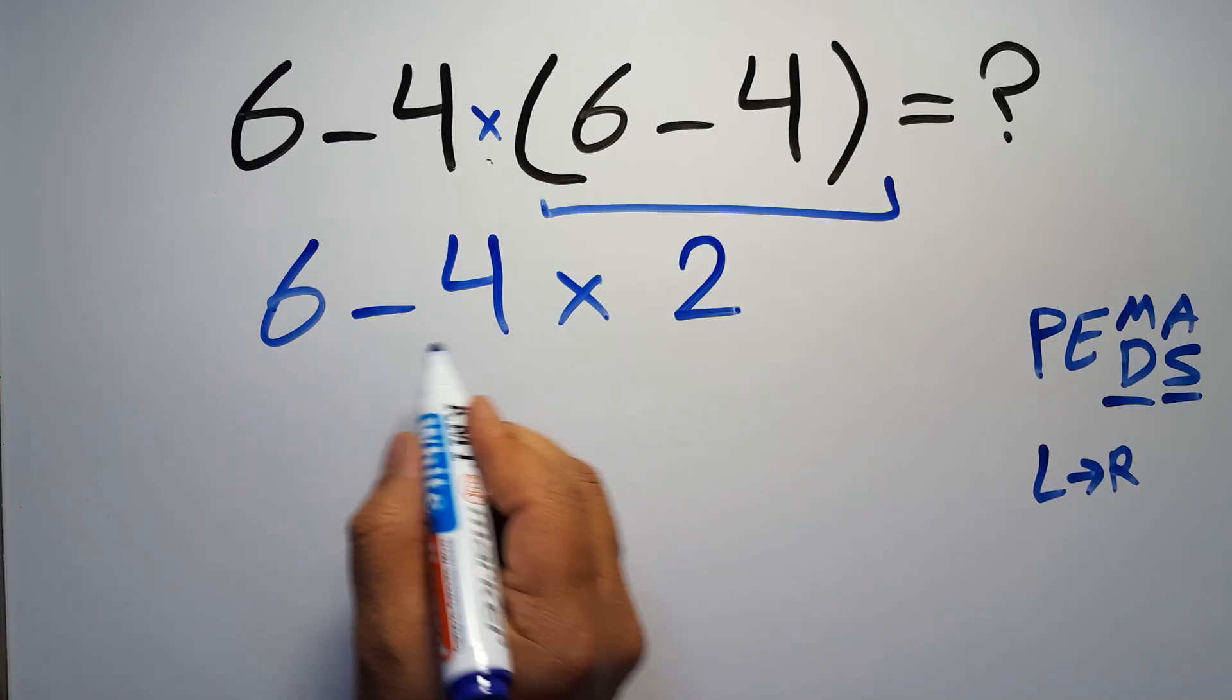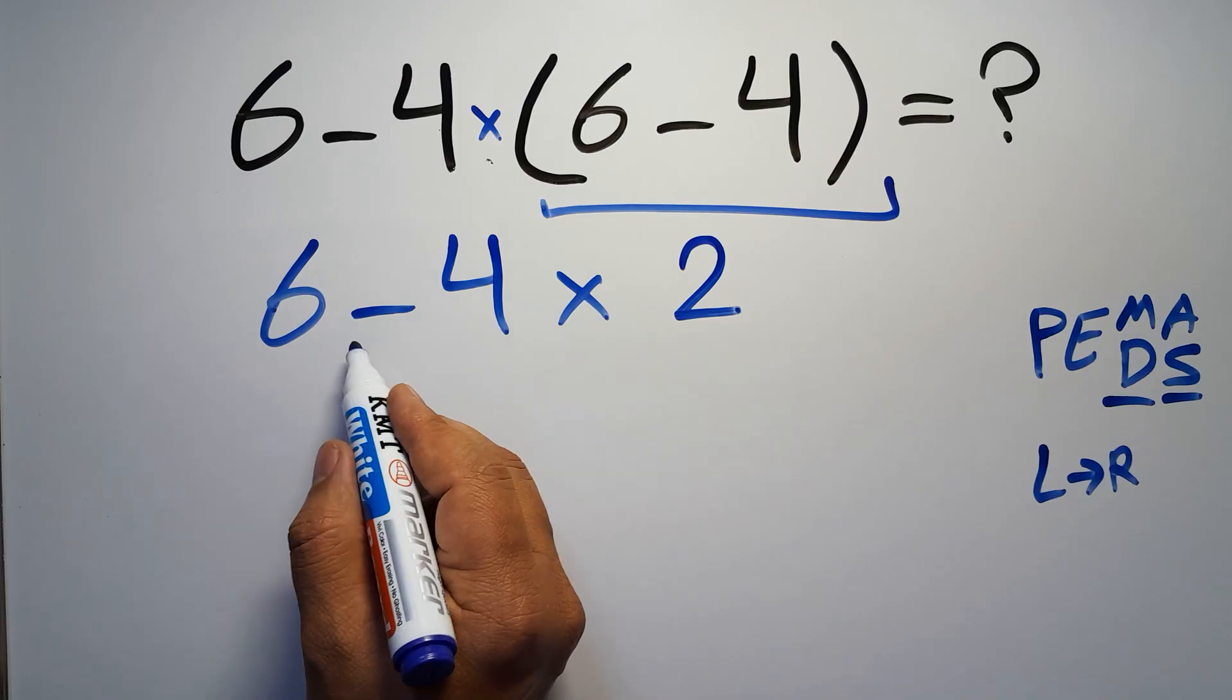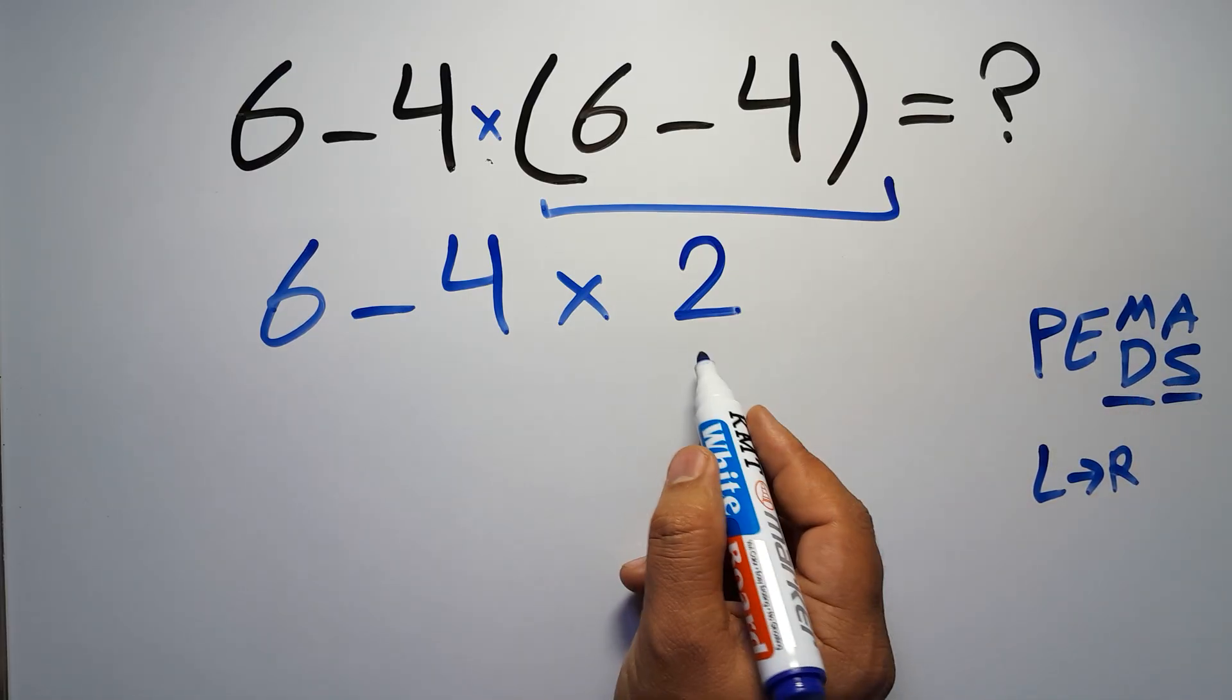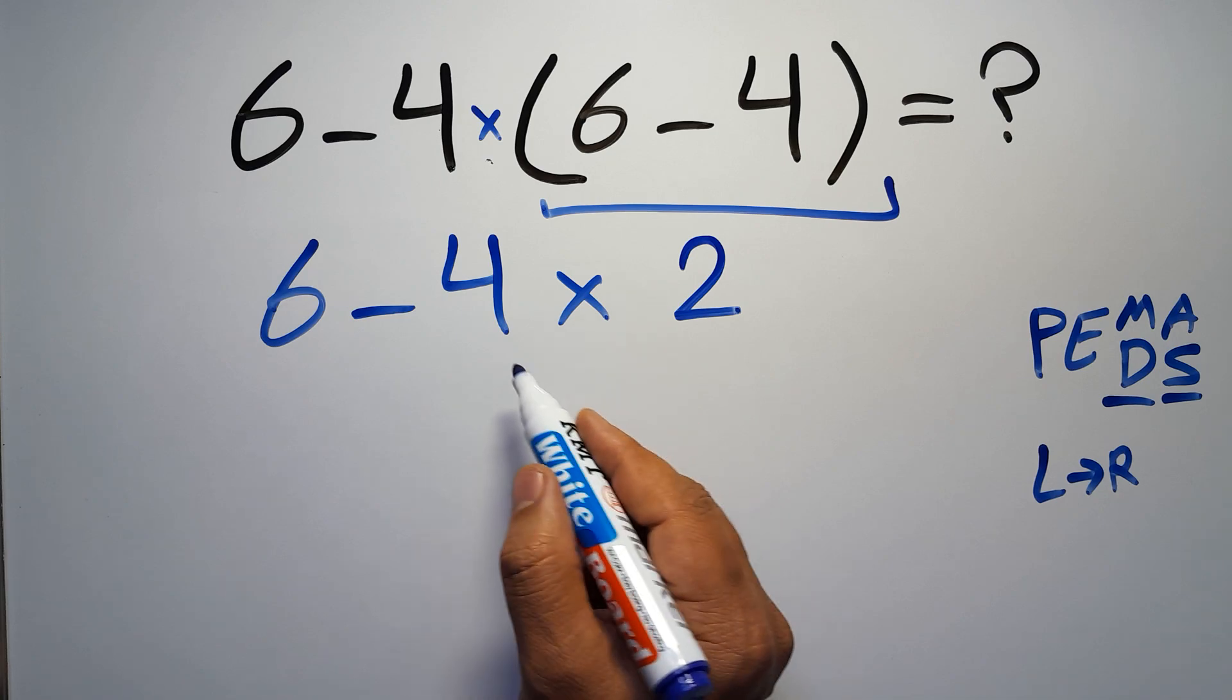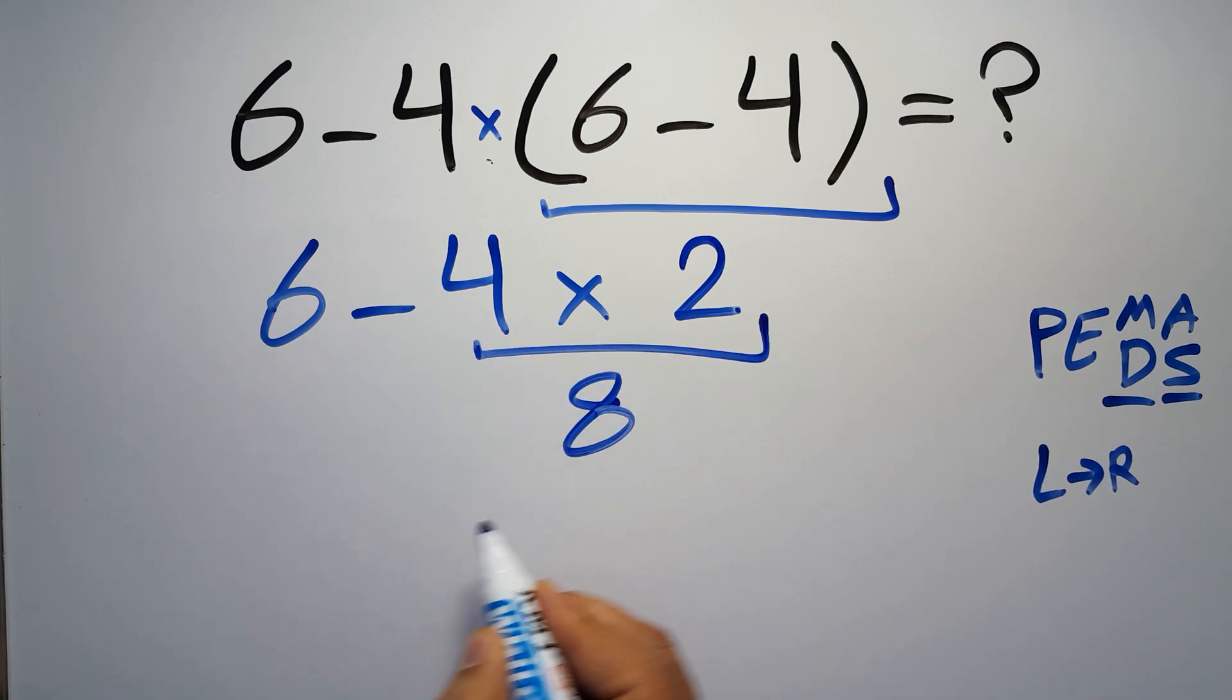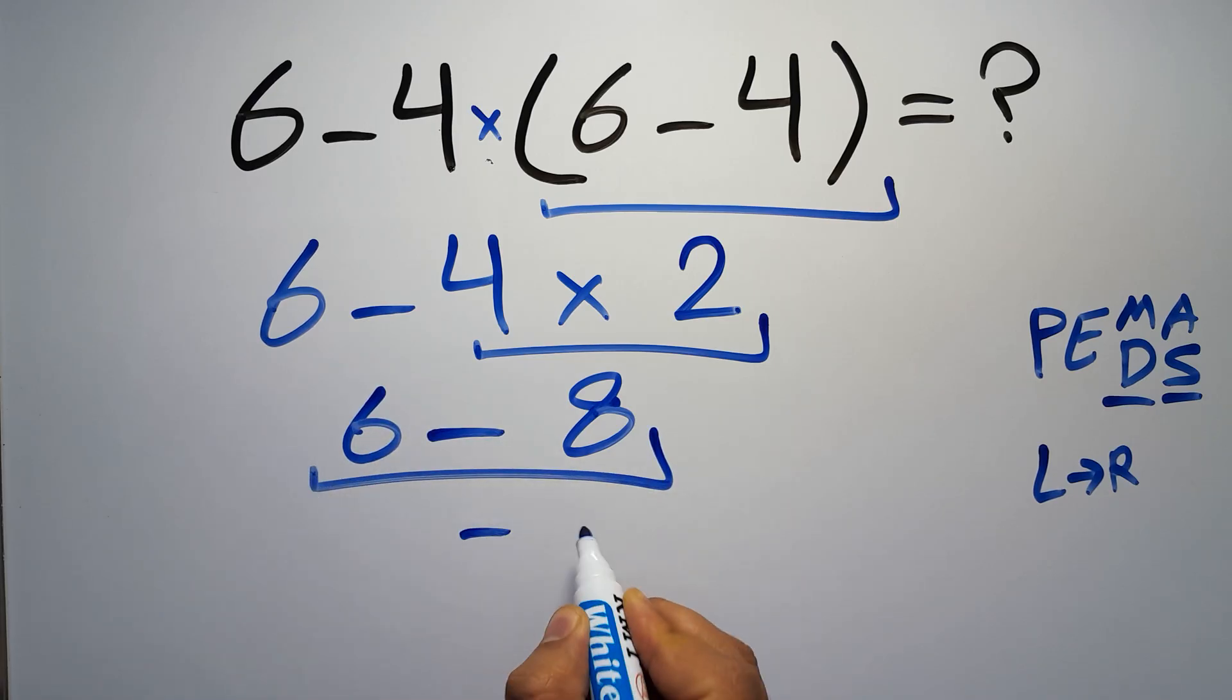Now we have one subtraction and one multiplication. According to the PEMDAS, multiplication has higher priority than subtraction, because multiplication comes before subtraction. So here first we have to do this multiplication. 4 times 2 equals 8. So 6 minus 8, which equals negative 2.